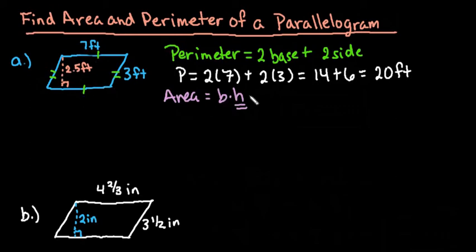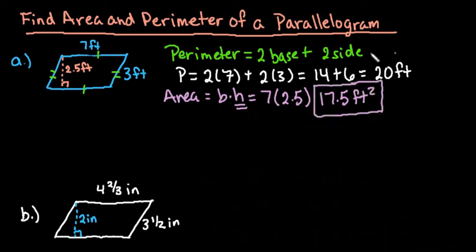For this one, since we're looking for perpendicular, we would use 7 as our base times our height of 2.5, and we would simply multiply these out. So 7 times 2.5 gives us 17.5 square feet. Area is always in units squared and perimeter is always in the unit, so it's important to pay attention to that as well.